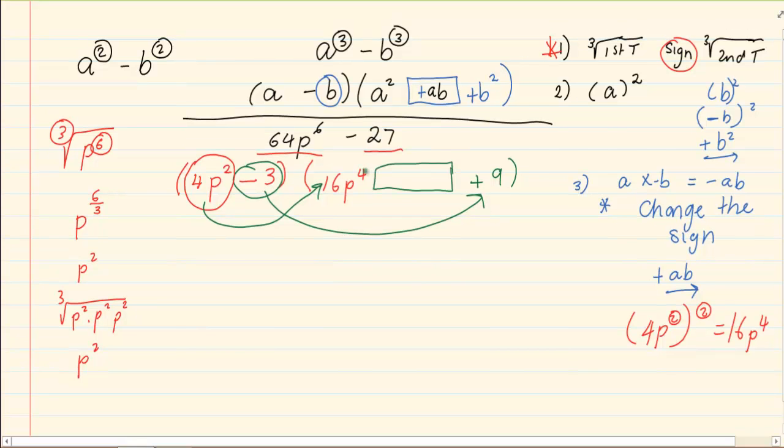The middle term is what we are concerned about. Now how do we get the middle term? We are going to take the first and second term in the first bracket and we are going to multiply it. So, we are going to say 4p squared times negative 3 which is equal to negative 12p squared and then we are going to change the sign which will give us positive 12p squared.